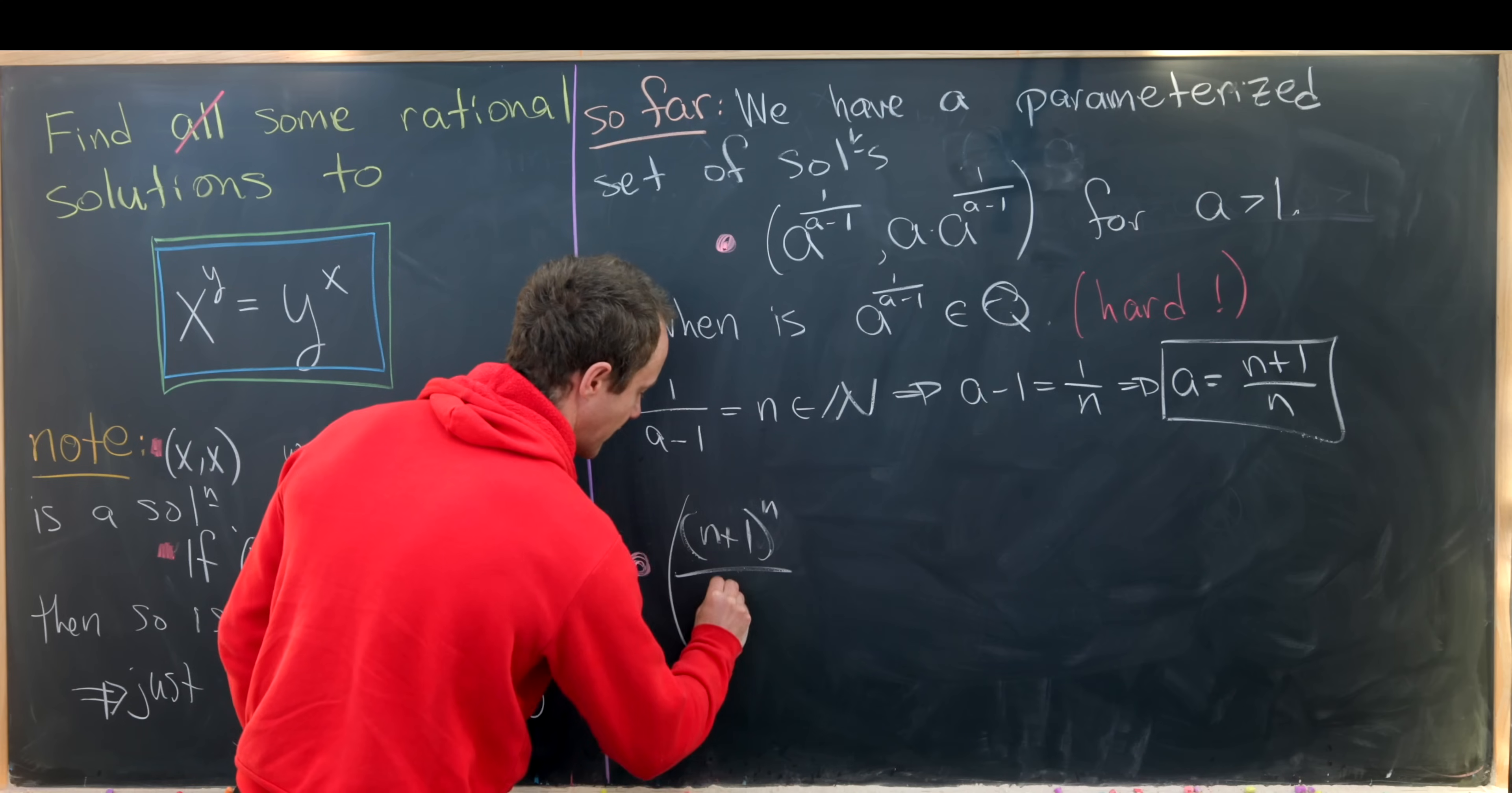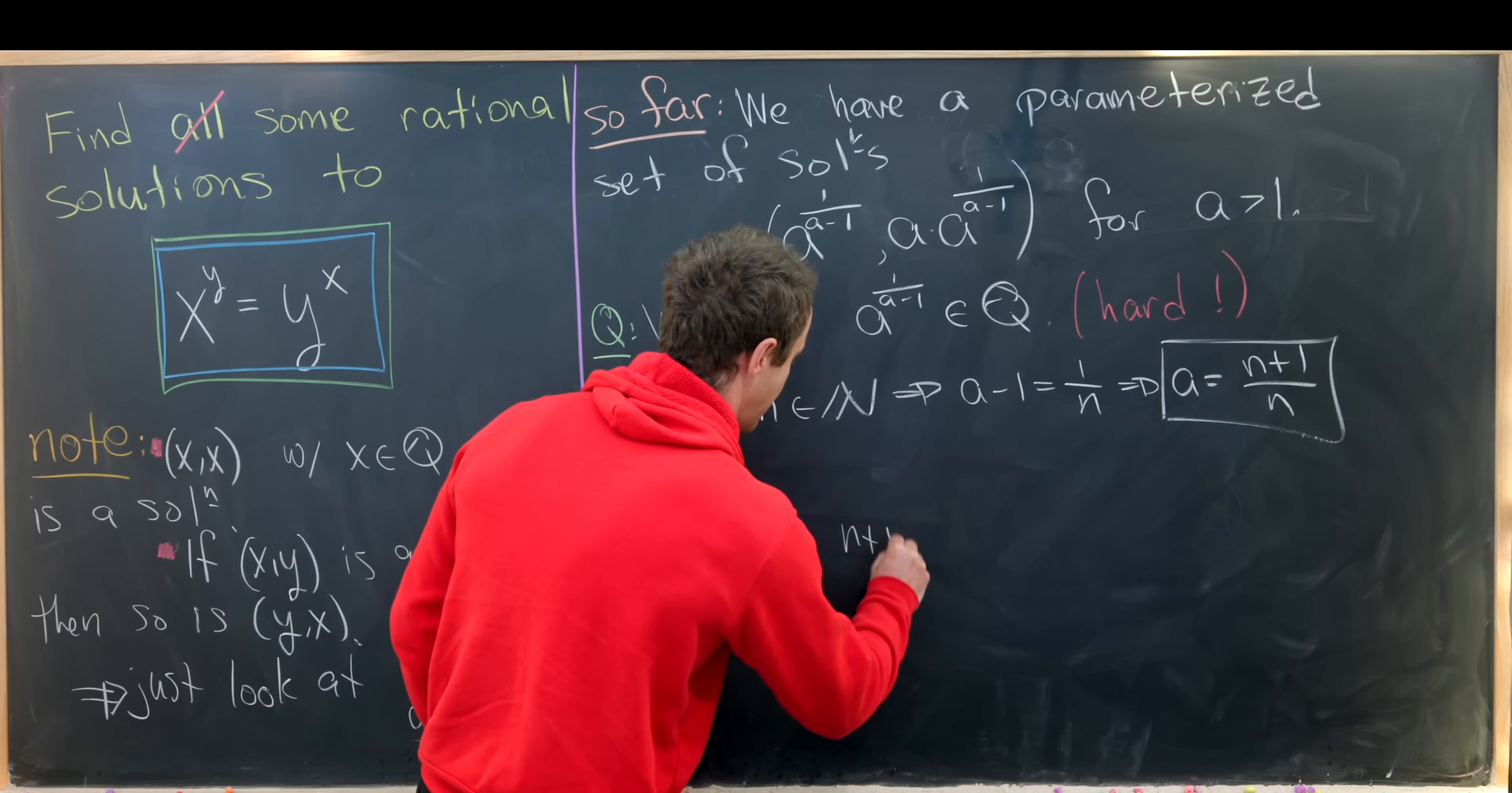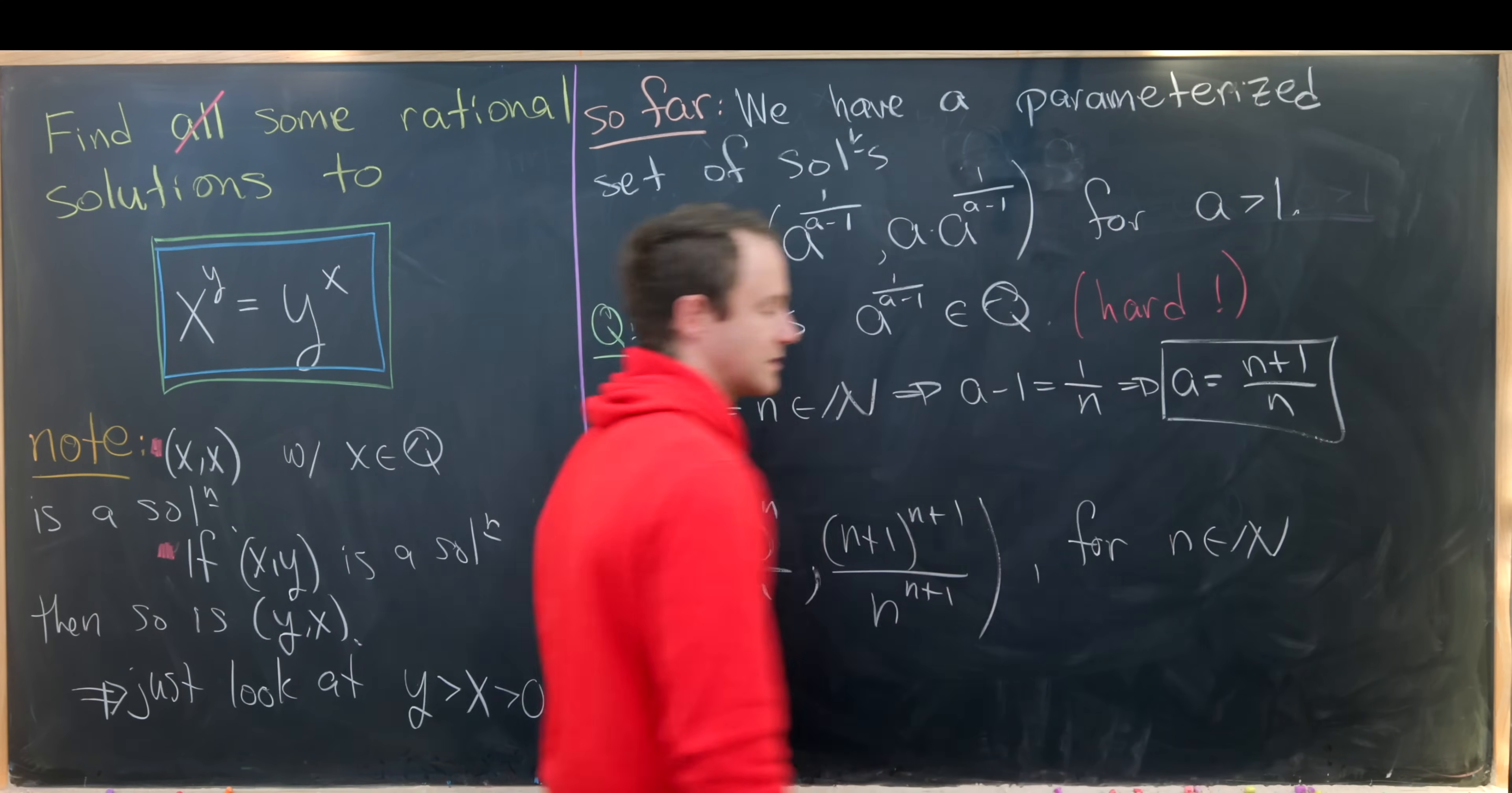So let's see, that means this solution set right here takes the following form. So we're going to have n plus one to the n over n to the n. That'll be this object after doing the substitutions that we've just built. And then we'll have n plus one to the n plus one over n to the n plus one. That'll be this term. And now this is going to be for n in natural numbers.